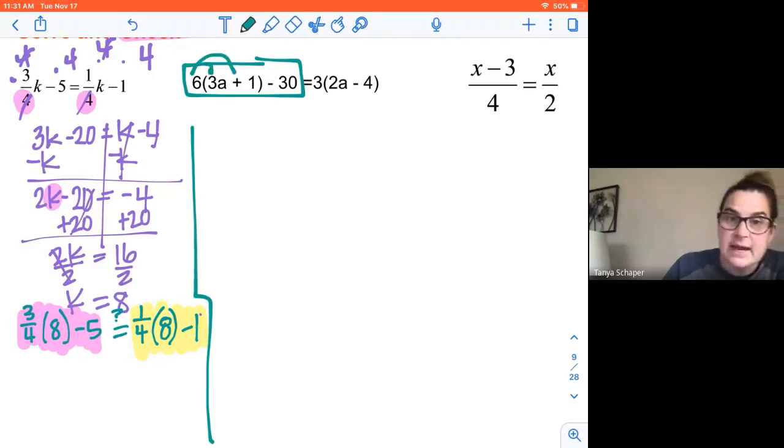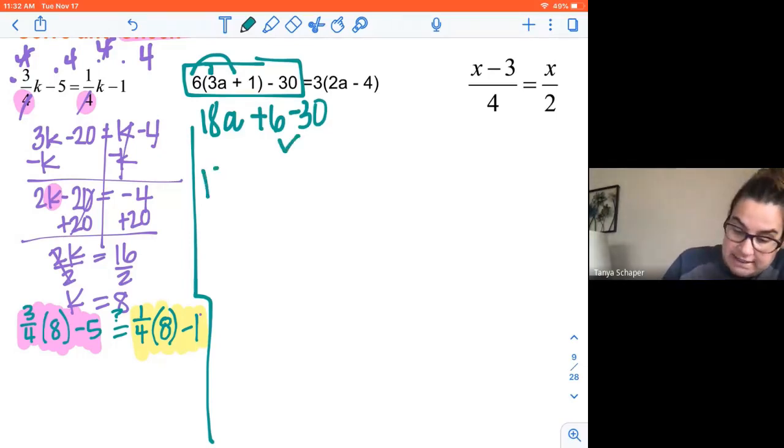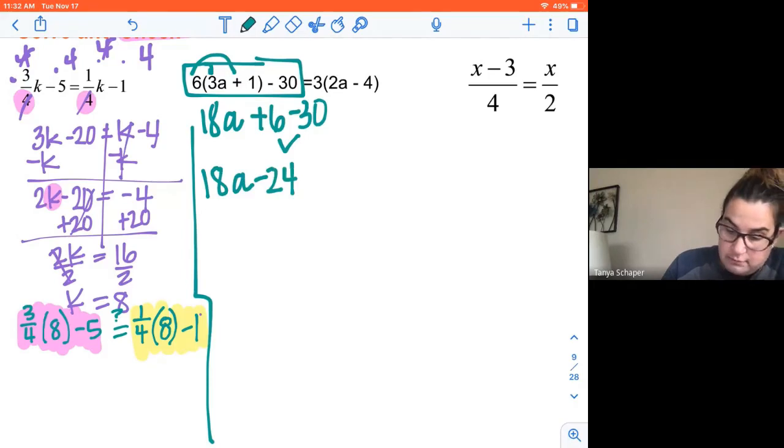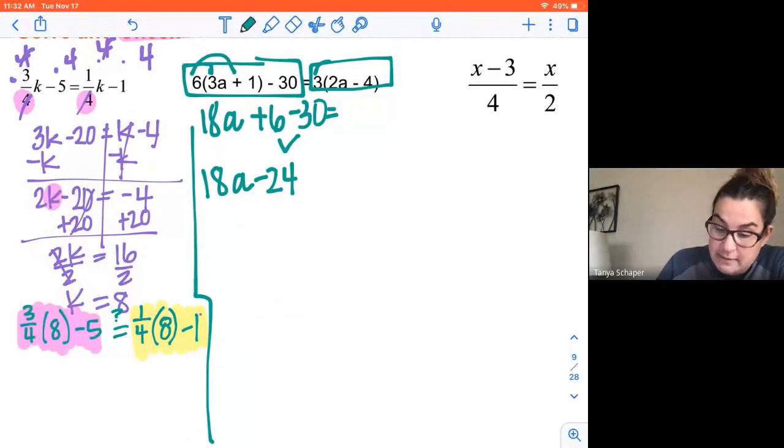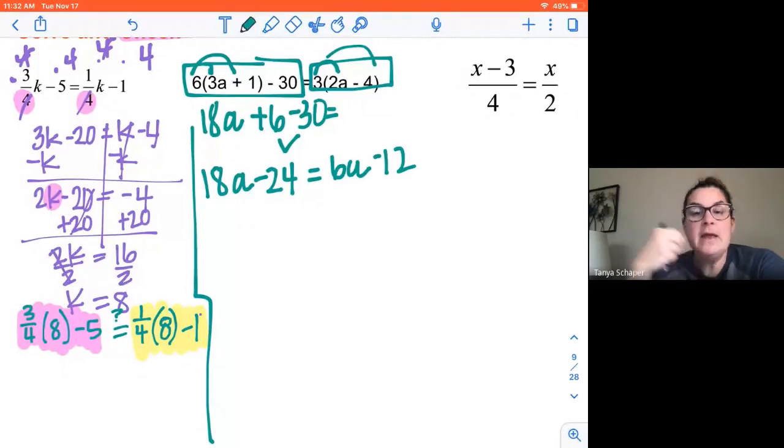So 6 times 3a is 18a, plus 6 times 1 is 6, minus 30. First thing I did was distribute. The next thing I'm going to do is combine like terms, 6 minus 30. So I have 18a minus 24. Now that side is simplified as I can get it. Now I'm going to focus on the right side of the equal sign. Again, using the skills we learned in unit one and unit two, we're going to take 3 times 2a is 6a, 3 times 4 is 12. So 18a minus 24 equals 6a minus 12. Now I have each side simplified.